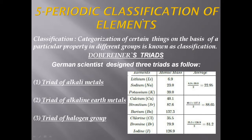Now why is it necessary to classify different elements? While classifying elements, it is easy to remember and easy to use in different ways. All 118 elements are classified into different groups and periods in the periodic table. Different scientists worked to classify elements into different groups and periods.